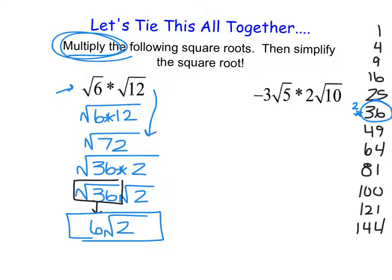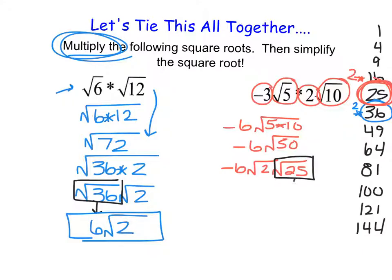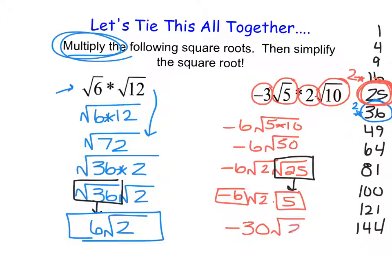In the next example, I notice numbers on the outside that need to be multiplied: negative 3 times 2 is negative 6. Then we have the square root of 5 times the square root of 10, which gives us the square root of 50. So we have negative 6 times the square root of 50. Now 50 is divisible by 25, as it's 25 times 2. So we rewrite as negative 6 times the square root of 25 times the square root of 2. The square root of 25 is 5, and 5 is now outside the root, so negative 6 times 5 gives us negative 30 times the square root of 2.